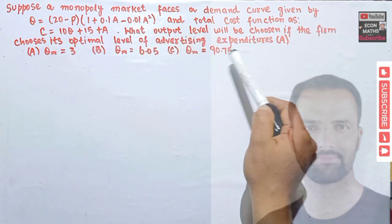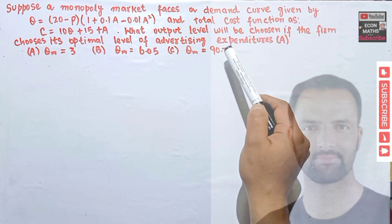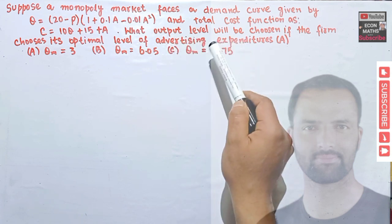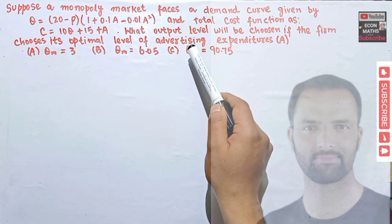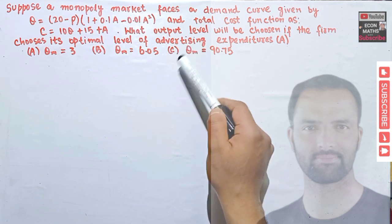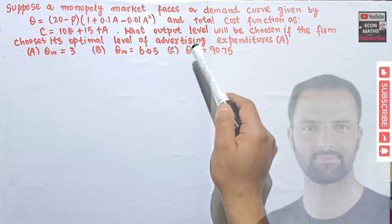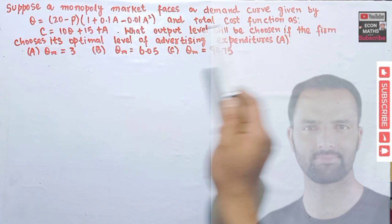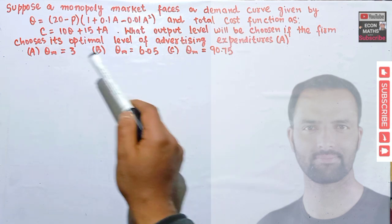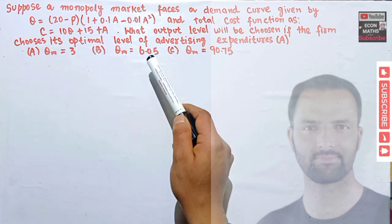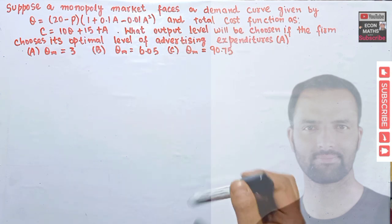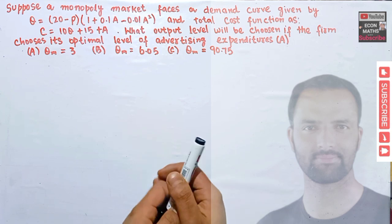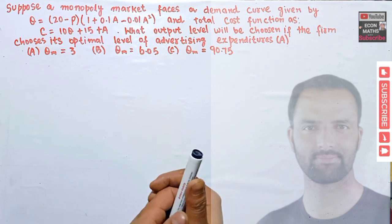We need to find the output level when this monopoly market is using the optimal level of advertising expenditure. The options are Q = 3, Q = 6.05, or Q = 90.75. Let's see how to solve this question.